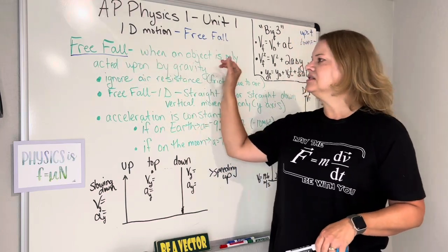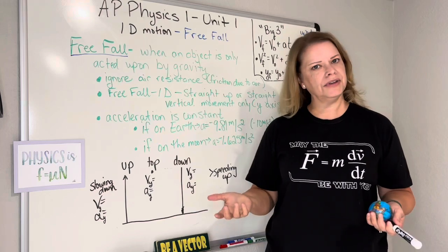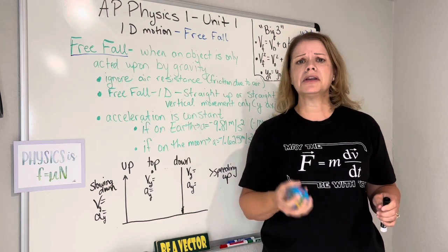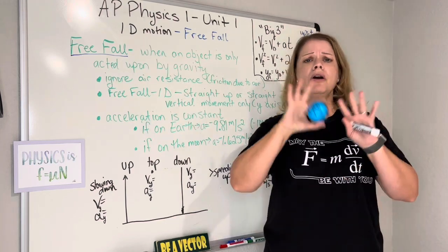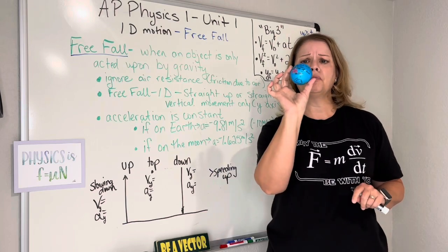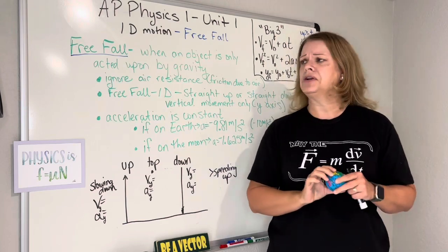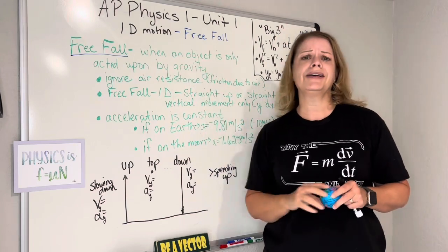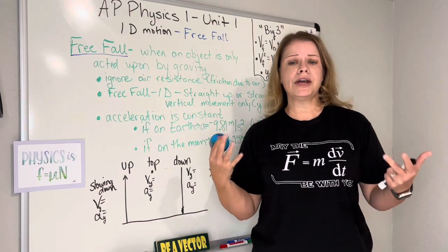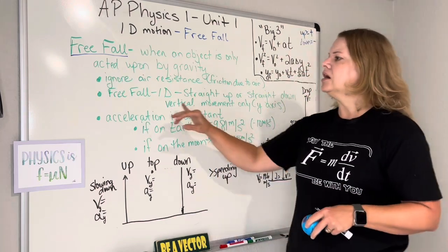Free fall is when an object is only acted upon by gravity. You've got a ball, you throw it up in the air, it comes down. Only gravity is acting on it. It has no motor to change the acceleration. We're just looking at the earth's natural pull on that object.